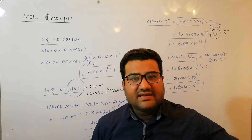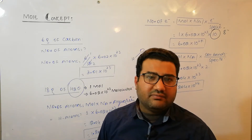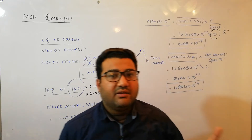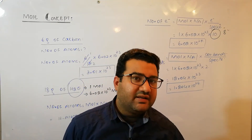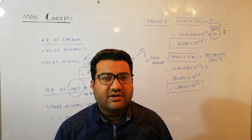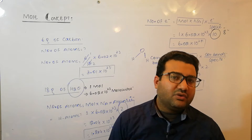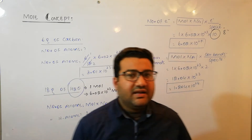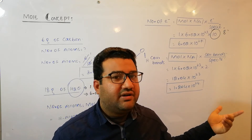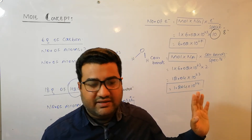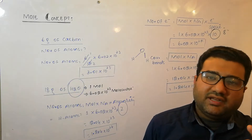In this way you can solve any numerical in which the mass in grams is given and you need to find moles, number of molecules, number of atoms, number of electrons, protons, neutrons, or total fundamental particles — by summing electrons, protons, and neutrons. The total number of covalent bonds can also be calculated from this data. Just keep the formula in mind.